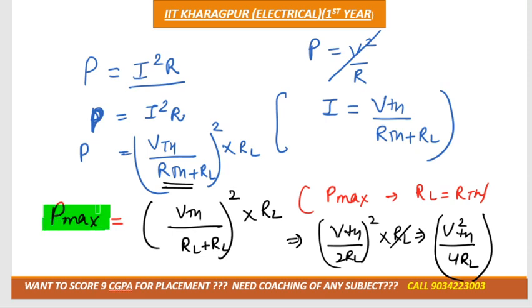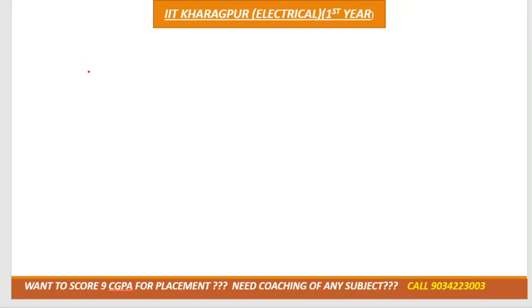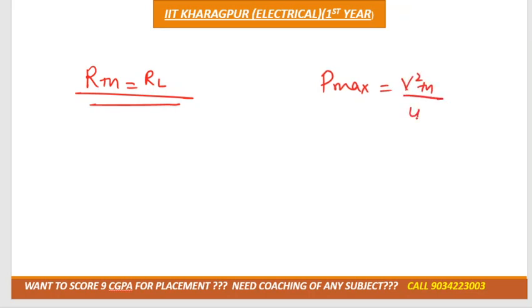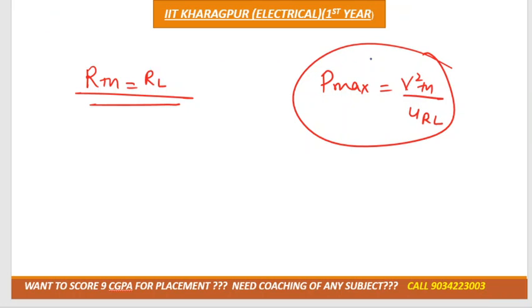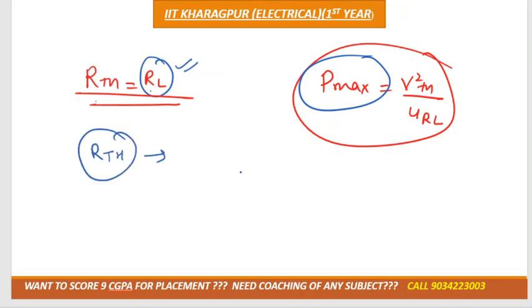So the maximum power transfer is equal to VTH squared divided by 4RL. For numerical purposes, you need to learn two conditions: first, if the Thevenin resistance equals the load resistance, maximum power will transfer; and second, P_max equals VTH squared divided by 4RL. They may ask for the maximum power value or the load resistance value. To solve, follow the same steps as Thevenin's theorem — you need to calculate VTH as done in Thevenin's theorem.